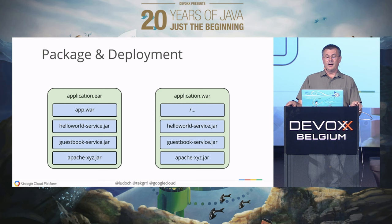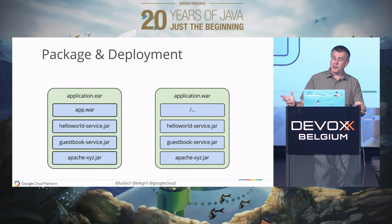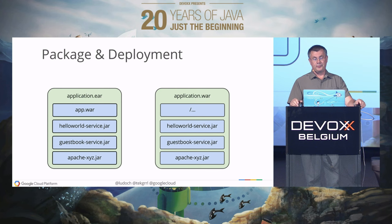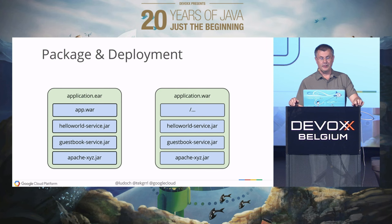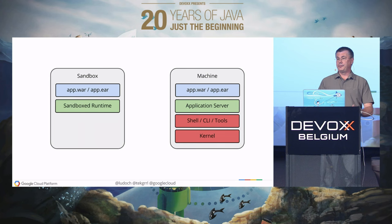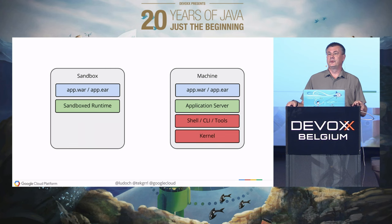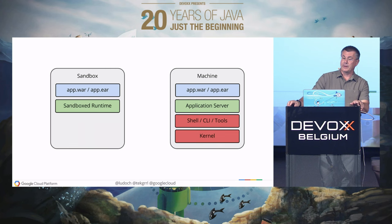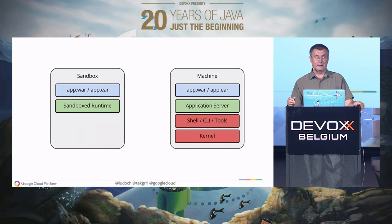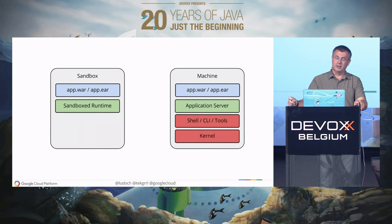I'm going to talk mostly about Java because this is what I do at Google, but this can apply to other runtimes as well. Traditionally, you are supposed to package your application in a Java EE EAR file or WAR file, with potentially multiple JAR files inside the application, and then deploy this Java EE web application to a platform-as-a-service cloud provider like App Engine. You can do it in two ways: the sandbox model, which has been in App Engine since 2009, and as a new wave, virtual machines.